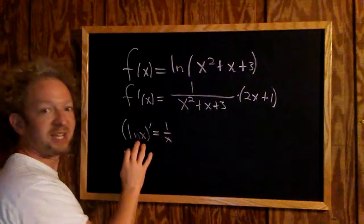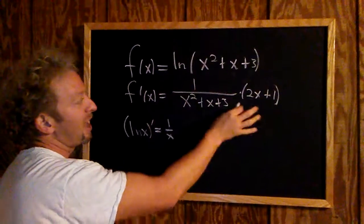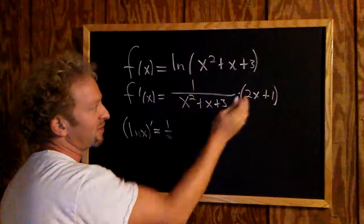So again, the derivative of ln x is 1 over x. So here it's just 1 over this stuff, and then you just multiply by the derivative of whatever you see here. That's it.